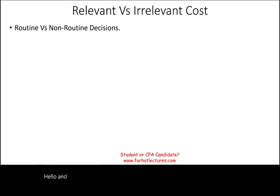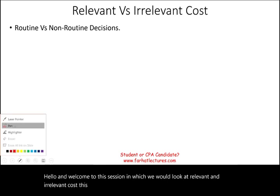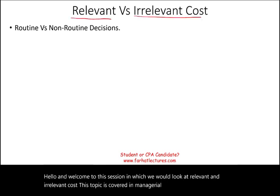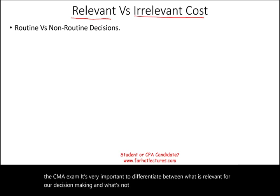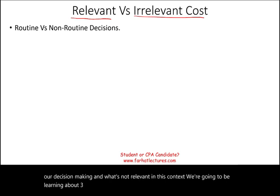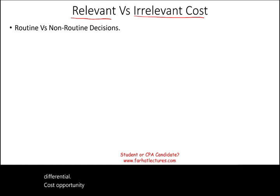Hello and welcome to the session in which we look at relevant and irrelevant cost. This topic is covered in managerial accounting, the CPA exam, as well as the CMA exam. It's very important to differentiate between what is relevant for our decision making and what's not relevant. We're going to learn about three terms: differential cost, opportunity cost, and sunk cost.